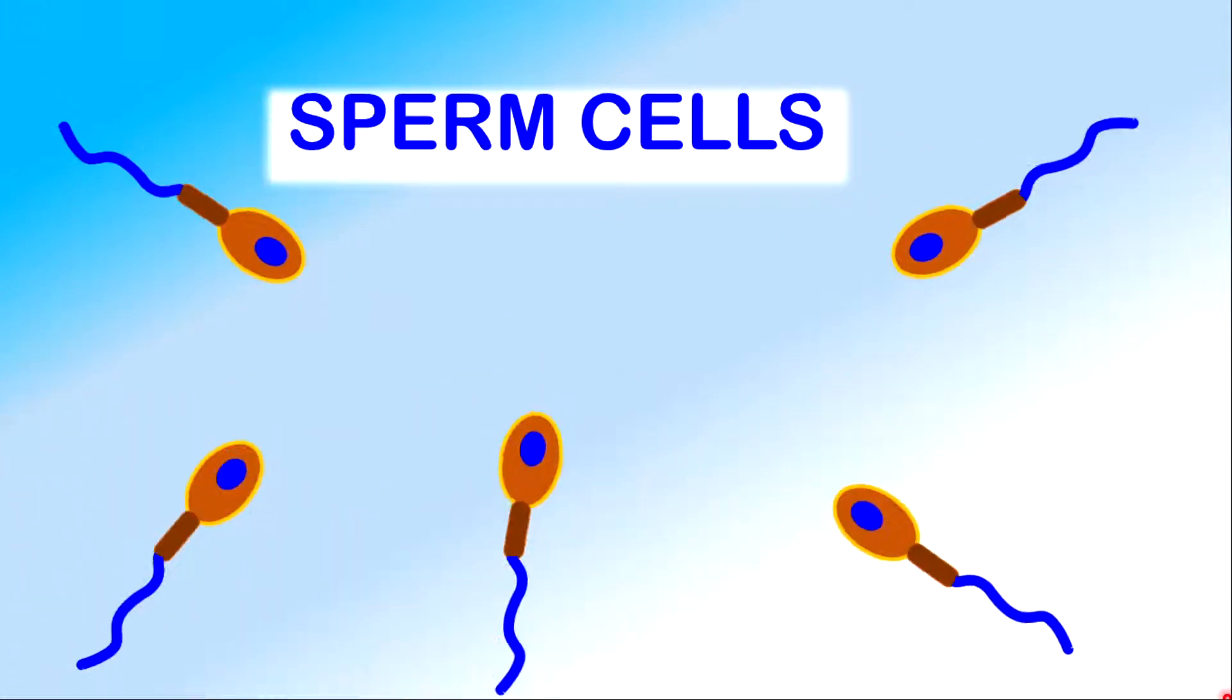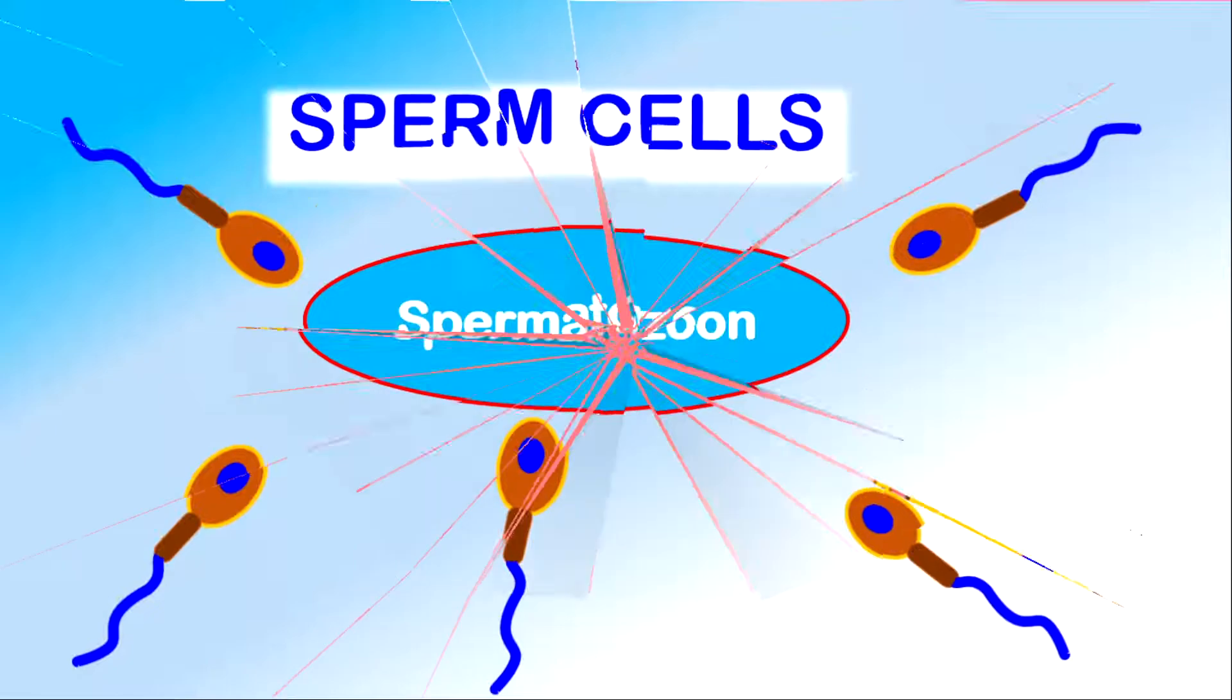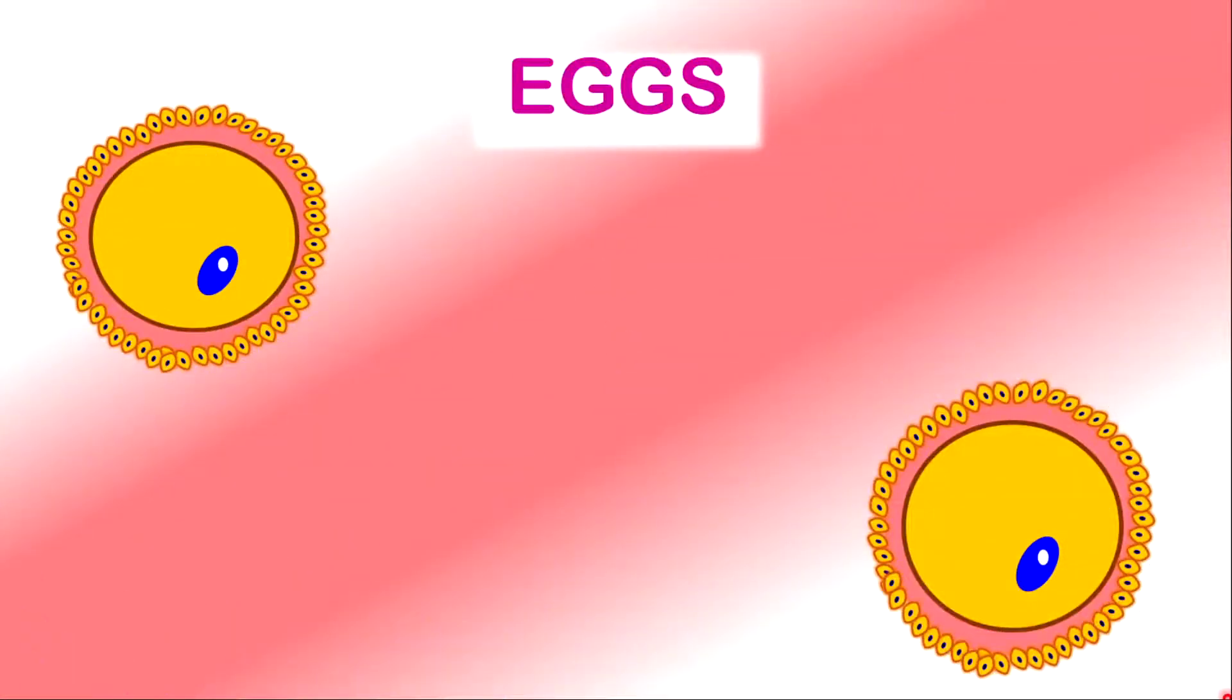For the sperm cells, they are called spermatozoa. The singular form is called spermatozoan. For the egg cell, egg cells, they are called ova. For the singular form, it is called ovum.